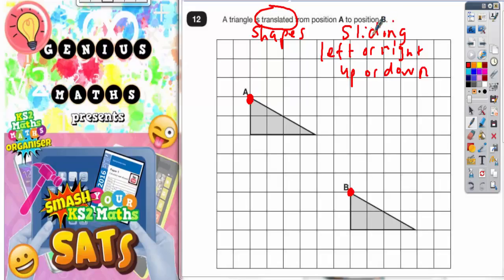And all you simply do is count the squares from going from A to position B. Very important you get that the right way round. We're not going from B across and up to A. We're going from A across and down to B.